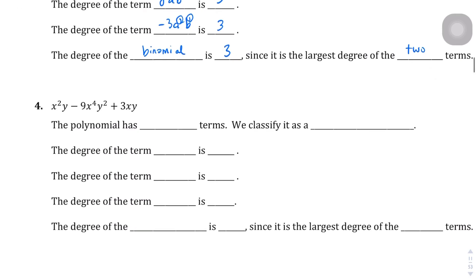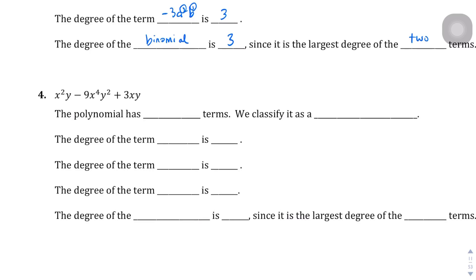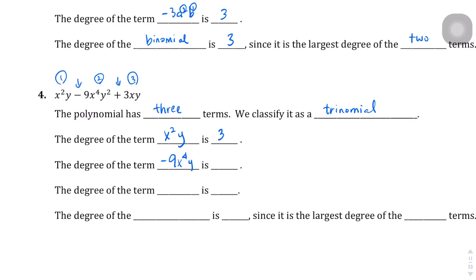Question four: x²y minus 9x⁴y² plus 3xy. This is separated by a subtraction sign and an addition sign, giving us three terms — so we classify it as a trinomial. The degree of the first term x²y is three (two plus one). The degree of the second term, negative 9x⁴y², is six (four plus two). The degree of 3xy is two. So the degree of this trinomial is six.